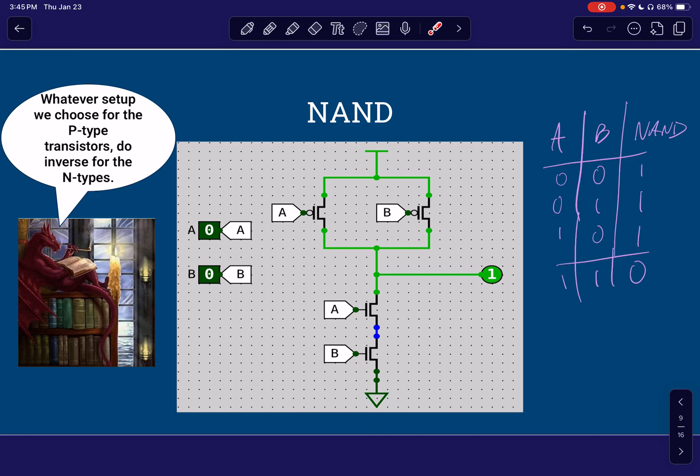So yeah, just to sort of summarize that, when I come up with that condition for when the gate output is true, and I hear myself saying A or B, either or, I'm thinking parallel. And now you might be wondering, well, your method of thinking, you think about the P type transistors you said. What do I do with the N types down here? How do I know what to do here? And this is where we're going to go to our really wise looking dragon friend. And he says, whatever setup we choose for the P type transistors, just do the inverse for the N types.